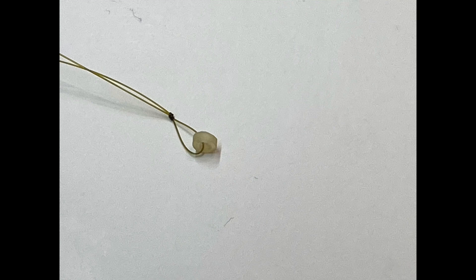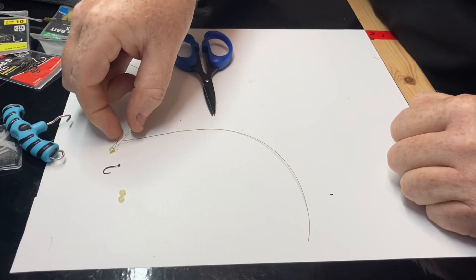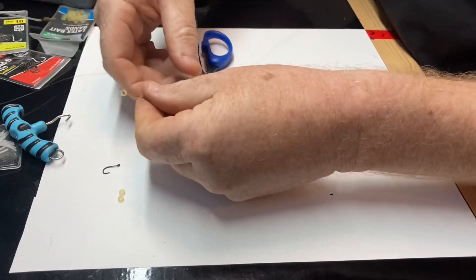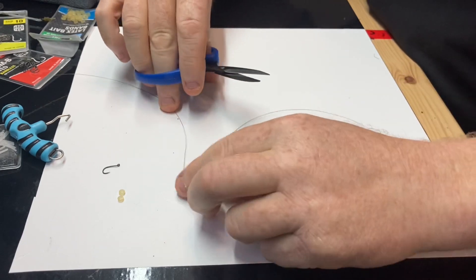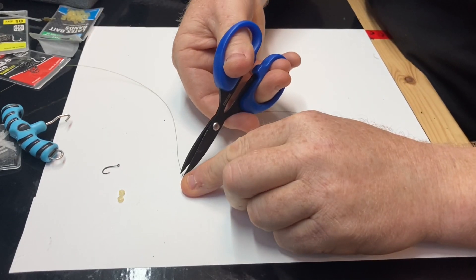The next stage is to take your piece along with the loop on and just cut that off. Don't cut it too tight. Leave it two or three mil from your knot.